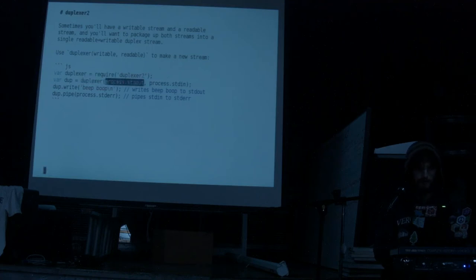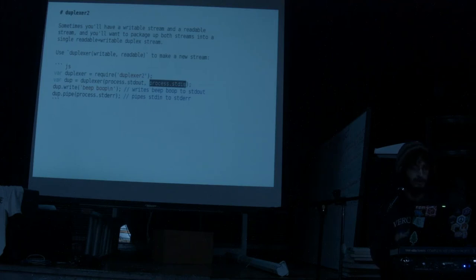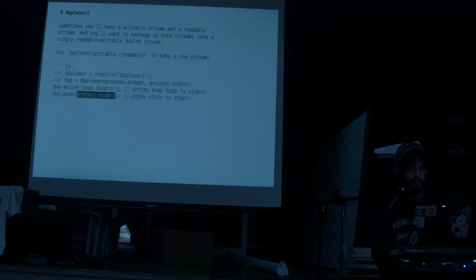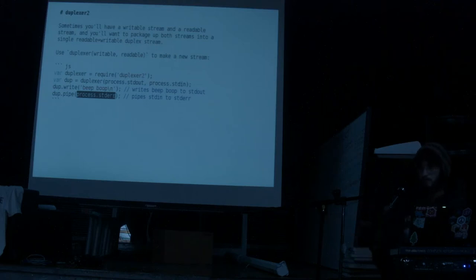You can use Duplexer2 to take process.stdout, which is a writable stream, and process.stdin, which is a readable stream, and combine them into a single stream. When you write to it, it goes to stdout; when you read from it, the input comes from stdin. Duplexer2 is really handy if you need a duplex stream to fit a particular interface.